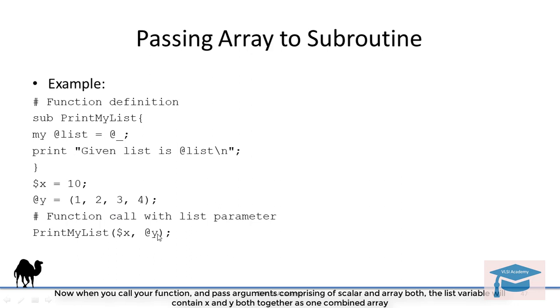So when you call your function and pass arguments with this, the list variable will contain x and y both together combined as one combined array.